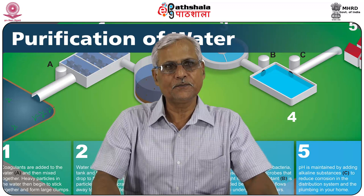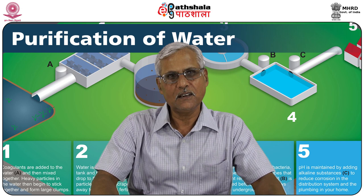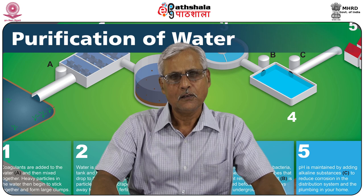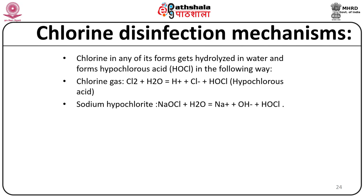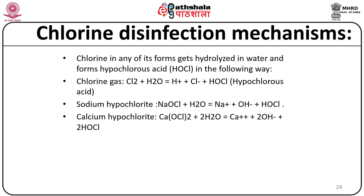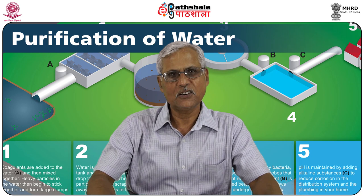Chlorine in any of its forms gets hydrolyzed in water to form hypochlorous acid (HOCl). Chlorine gas: Cl₂ + H₂O → H⁺ + Cl⁻ + HOCl. Sodium hypochlorite: NaOCl + H₂O → Na⁺ + OH⁻ + HOCl. Calcium hypochlorite: Ca(OCl)₂ + 2H₂O → Ca²⁺ + 2OH⁻ + 2HOCl. Hypochlorous acid dissociates into H⁺ and hypochlorite ion (OCl⁻). The disinfecting action of chlorine is mainly due to hypochlorous acid and to a lesser extent due to the hypochlorite ion.